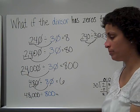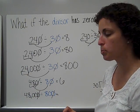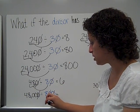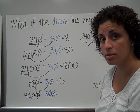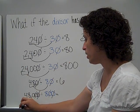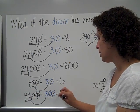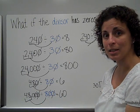48,000 divided by 800. Well, yes, I have matching zeros in the ones place, but I also have another pair. This time I have a zero in the tens place and a zero in the tens place, so I'm going to mark out both zeros. That leaves me with 48 divided by 8, which is 6, and one zero to add. So 48,000 divided by 800 is 60.